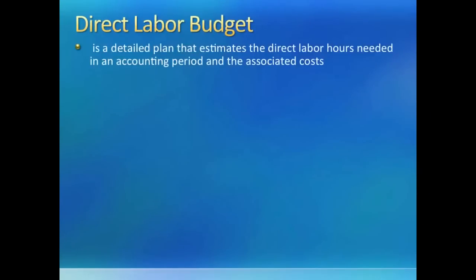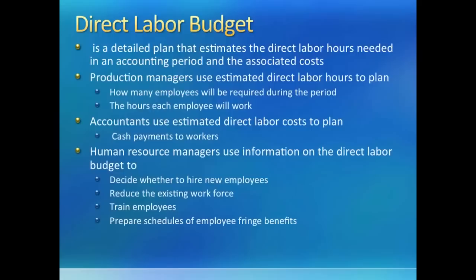Welcome back to operating budgets. We have already made sales, production, and materials budgets — you will need them handy when working through problems here. The next budget in line is the direct labor budget. It tells us what we would need to pay for payroll and how many hours we would be working. Planning for hours and rates in advance helps companies manage future hiring, cash payments to workers, training, and other employee-related costs.